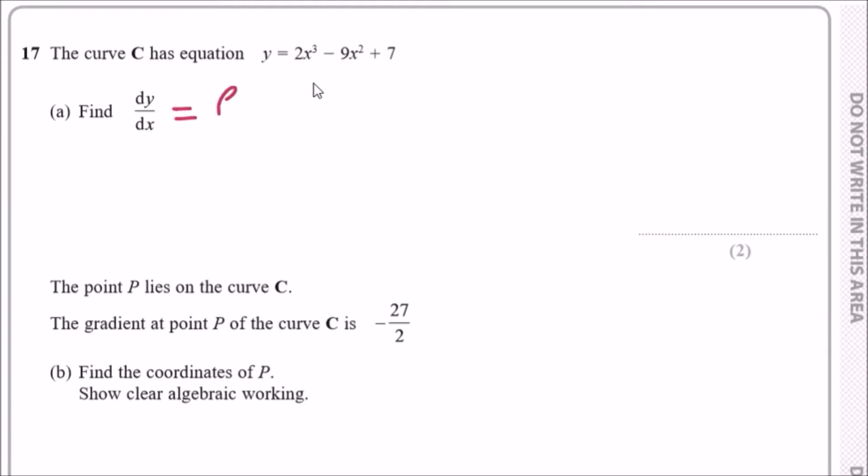Then subtract the power by 1, you get 2. The next one, drop the power, so 9 times 2 is 18, minus the power by 1 you get 1, so just x. If you just have a constant, well it's 0. So that's it: 6x² - 18x. That's all you do.